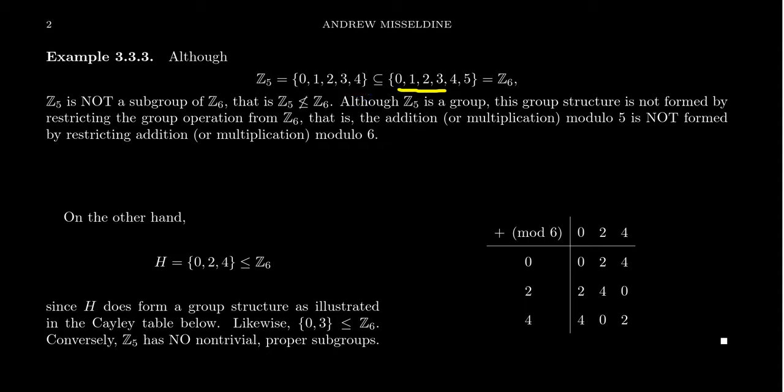Z6, on the other hand, would be the set 0, 1, 2, 3, 4, 5. And so as sets, this is a very natural subset containment here. Z5 contains everything that Z6 has, except it doesn't have the element 5 itself. But the thing to remember here is that although Z5 can be viewed as a subset of Z6, Z5 by no means is a subgroup of Z6. So we would actually say that Z5 is not a subgroup of Z6 here. And what's wrong here?